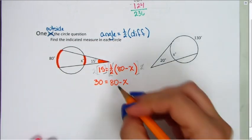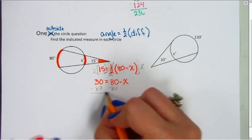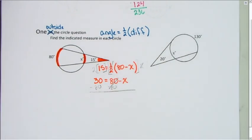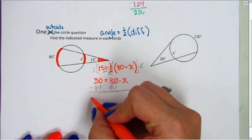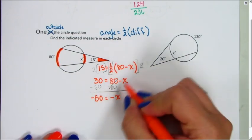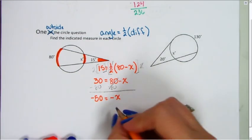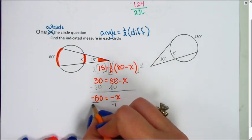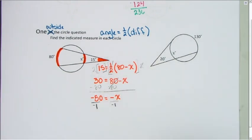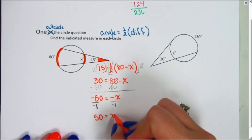I need to get the negative x by itself, so I'm going to subtract 80 on both sides. 30 minus 80 is negative 50. That equals negative x. I don't want negative x, I want positive x, so I'm going to divide both sides by negative 1, which gives me 50 equals x.